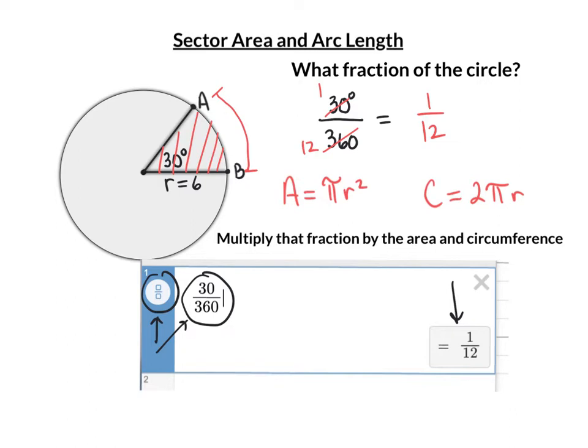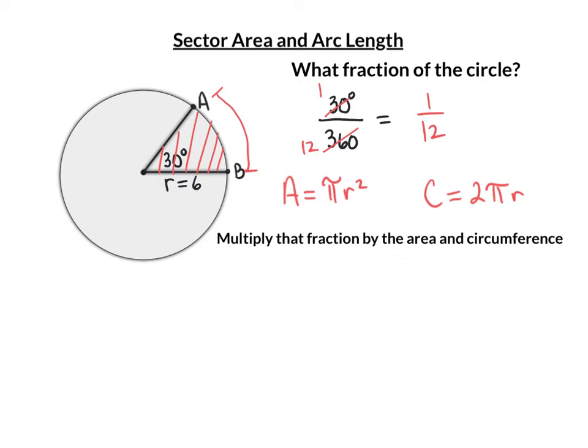The first thing you do is figure out that fraction of the circle. If you're taking a half of something, you multiply by one half — one half times 12 is 6. If you're taking two-thirds of something, you multiply by two-thirds — two-thirds times 12 is 8. So to take a twelfth of something, we multiply it by a twelfth. We are going to take one-twelfth of the area and one-twelfth of the circumference.